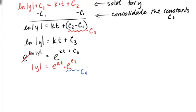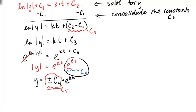So at this point, we need to get rid of the absolute value signs. In order to do that, we're going to say y equals plus or minus. This turns into c sub 4, so we're going to call this c sub 4 times e to the kt. And again, what we can do with the plus or minus, we can wrap all of that up together into a new constant called c sub 5. So what we end up with finally is y equals c sub 5 times e to the kt.